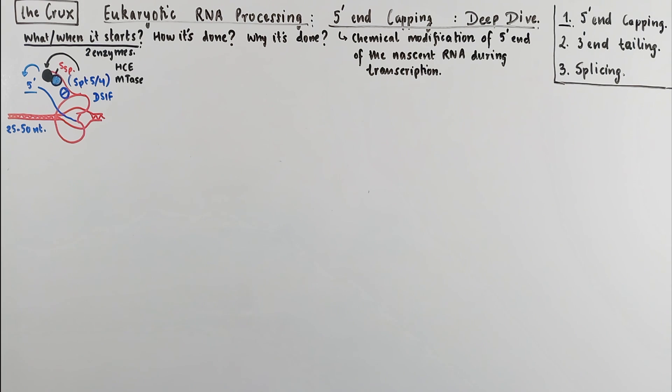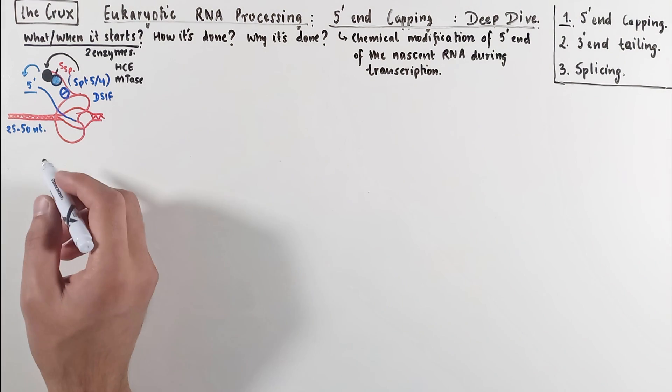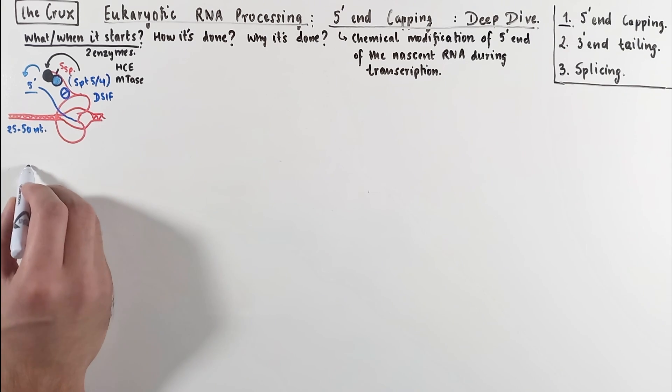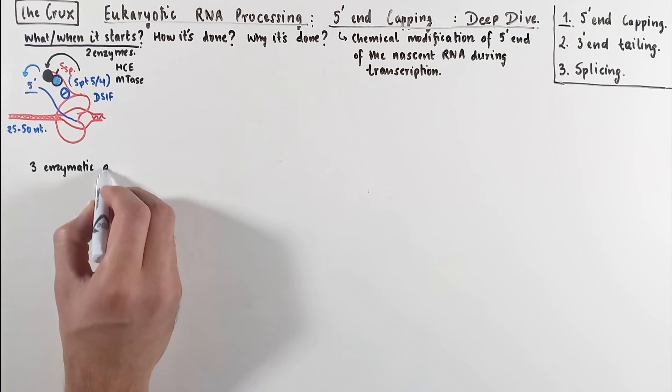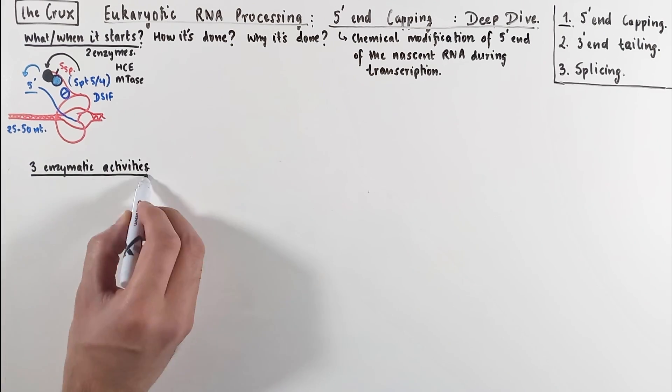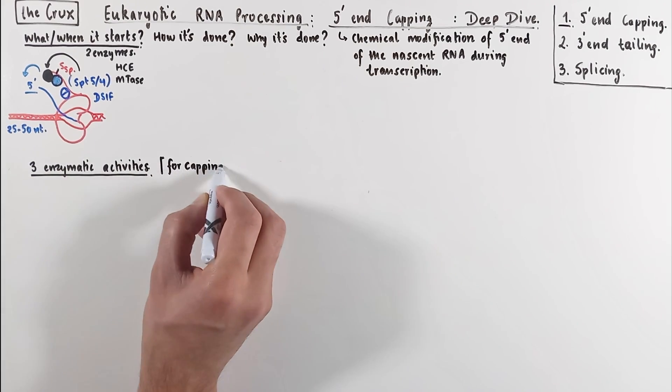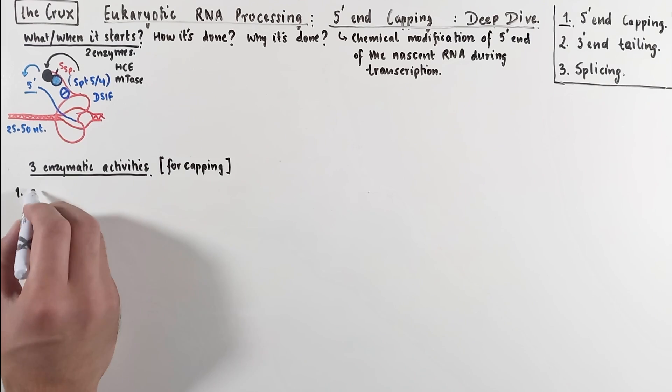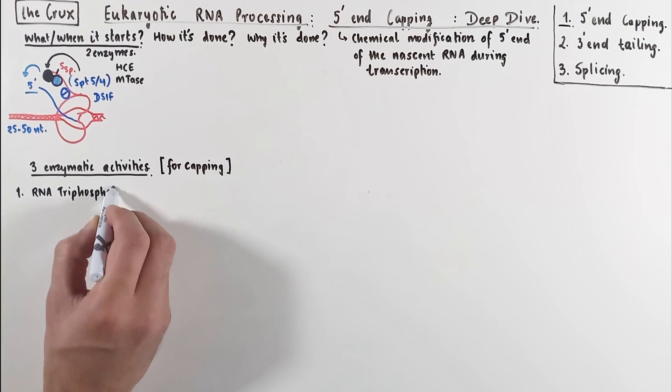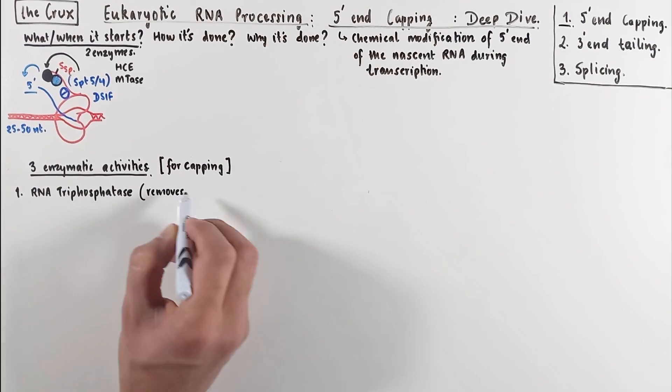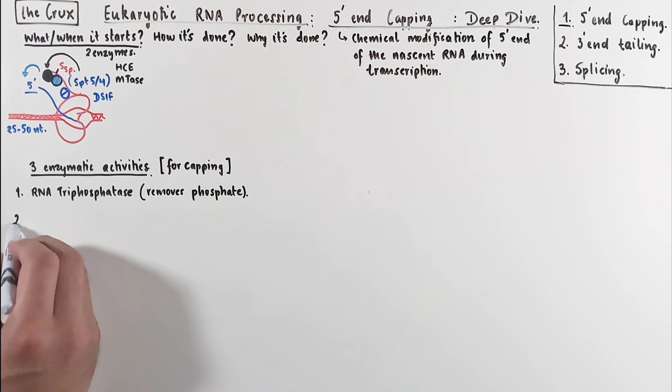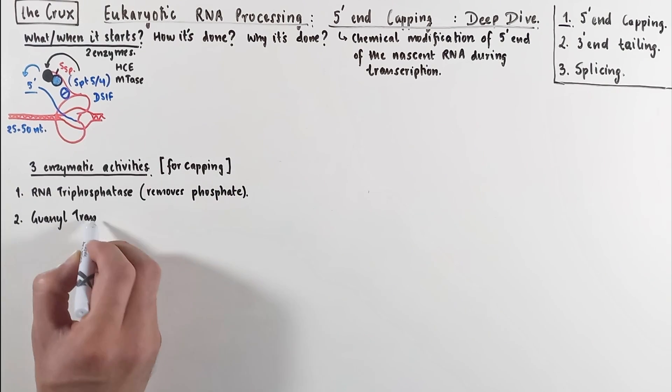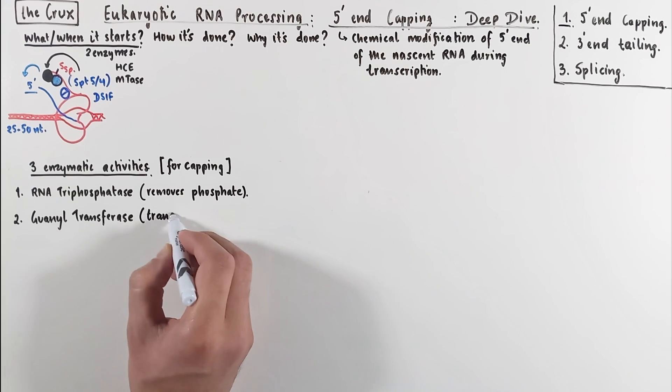Let's now get into the nitty-gritty part of the enzymatic activities required to form a 5' cap. Understanding that there are three special enzymatic activities will help you follow the rest of the video easily. The first activity is the RNA triphosphatase, which essentially removes the phosphate. The second is the guanyltransferase, which simply works to transfer a guanosine phosphate.